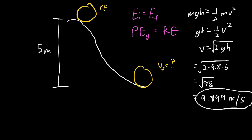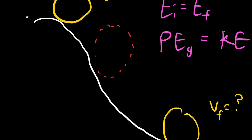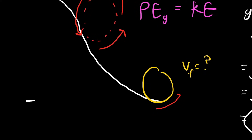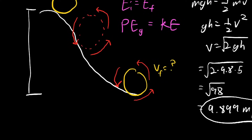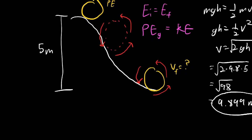However, there's a problem in real life. If you have a bowling ball rolling down a hill, the ball isn't just translating downward — it's also rotating as it travels down, and it's still rotating at the bottom. We need to ask: does this rotation make any difference to the velocity? To answer this, we need to consider a rotational kinetic energy formula.